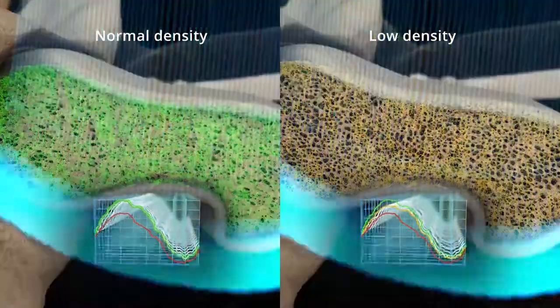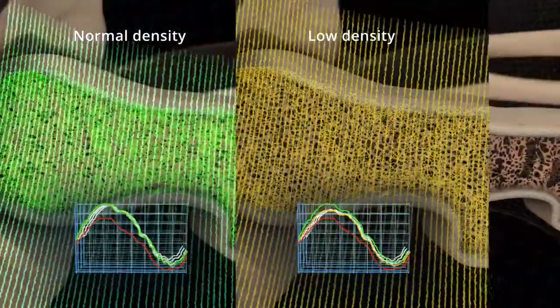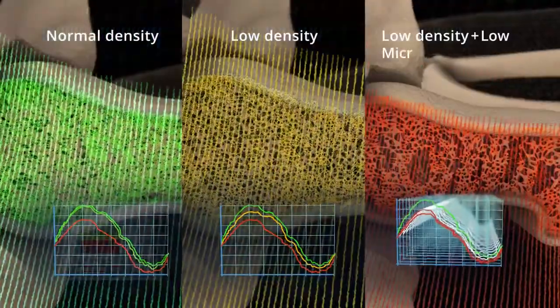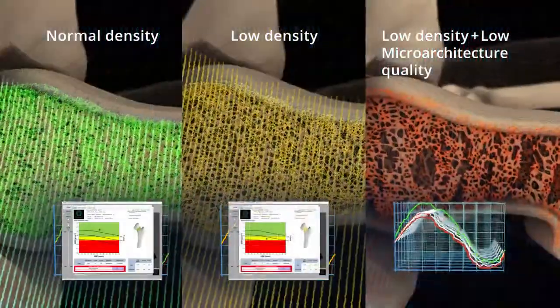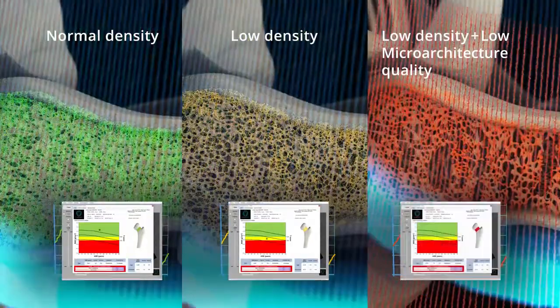Echos, with an easy and quick examination, quantitatively assesses the bone density and the quality of microarchitecture, providing an accurate estimation of the fracture risk.